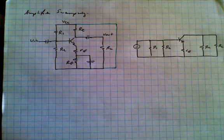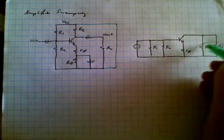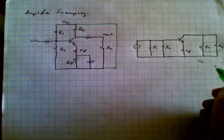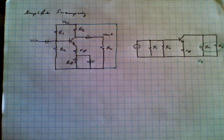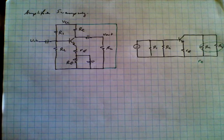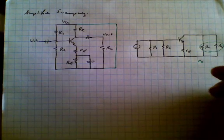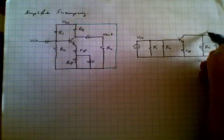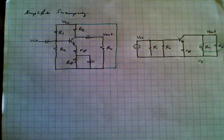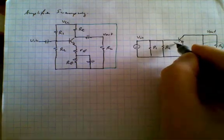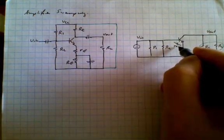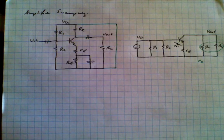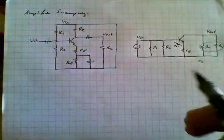And then of course in the collector circuit there's RC and in parallel with that is RL. And we'll combine these two resistors into a single resistor we'll call little rc. So we'd like to find the gain of this circuit. This is Vin and here is Vout.